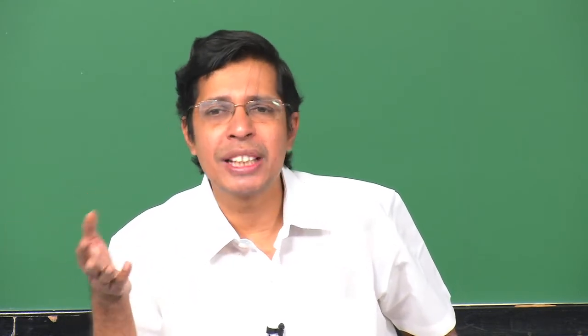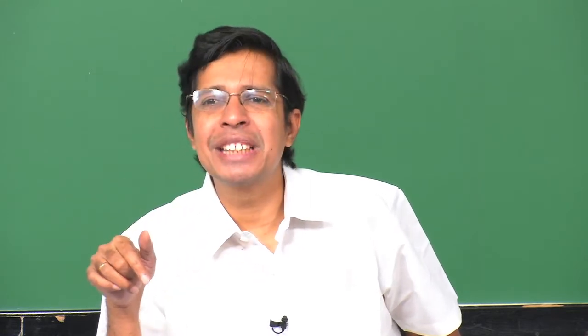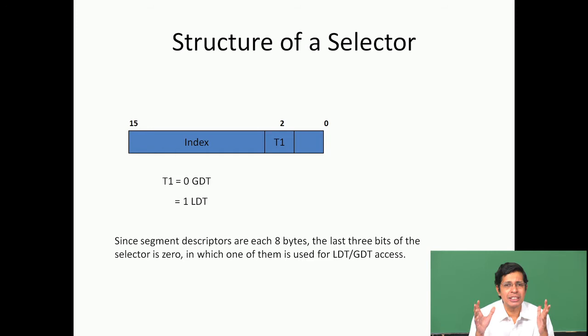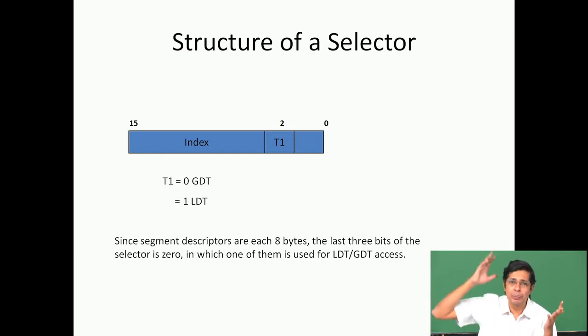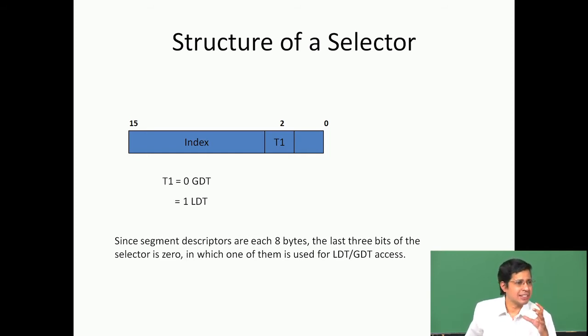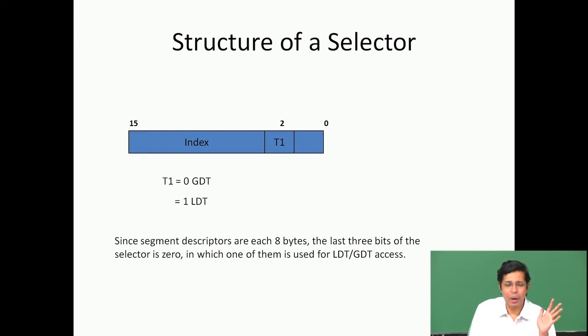If I want to access the same 0x20 descriptor in the LDT, I should use 0x24 - that is 00100100 in binary, where bit 2 is now 1, indicating the LDT. So 0x24 means the 0x20th descriptor in the LDT. This is an architectural convention to avoid having a separate bit for LDT vs GDT. The architecture will load your descriptor table at an address that is a multiple of 8, pointed to by the GDTR.